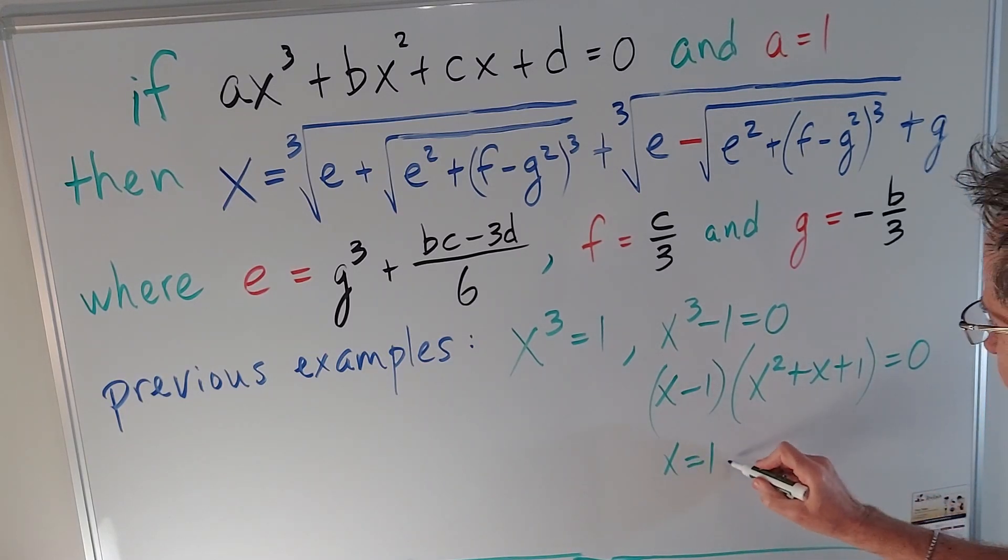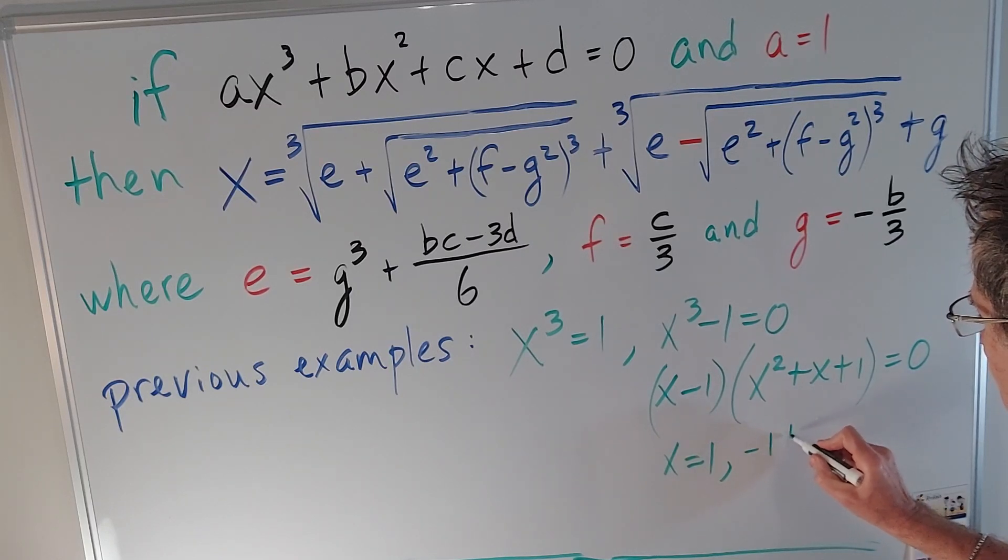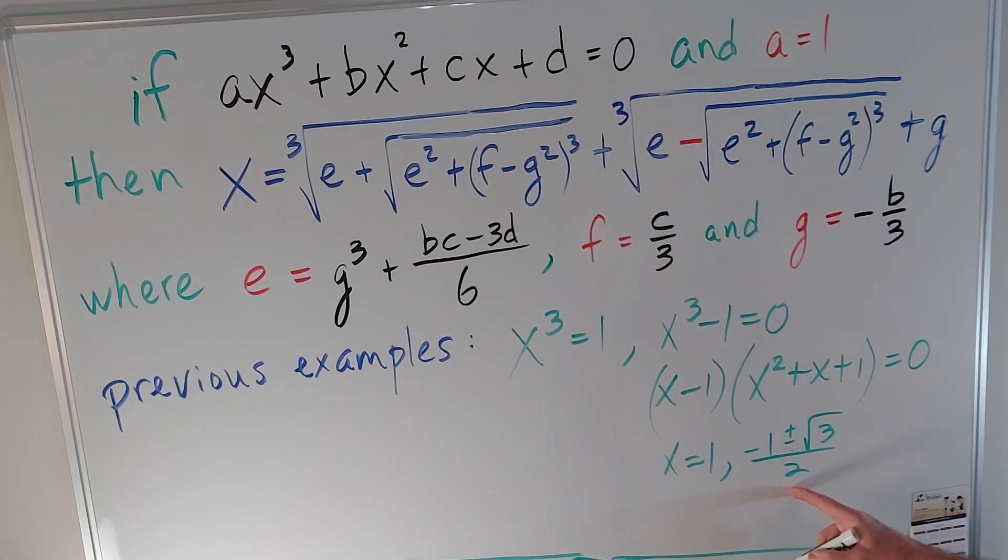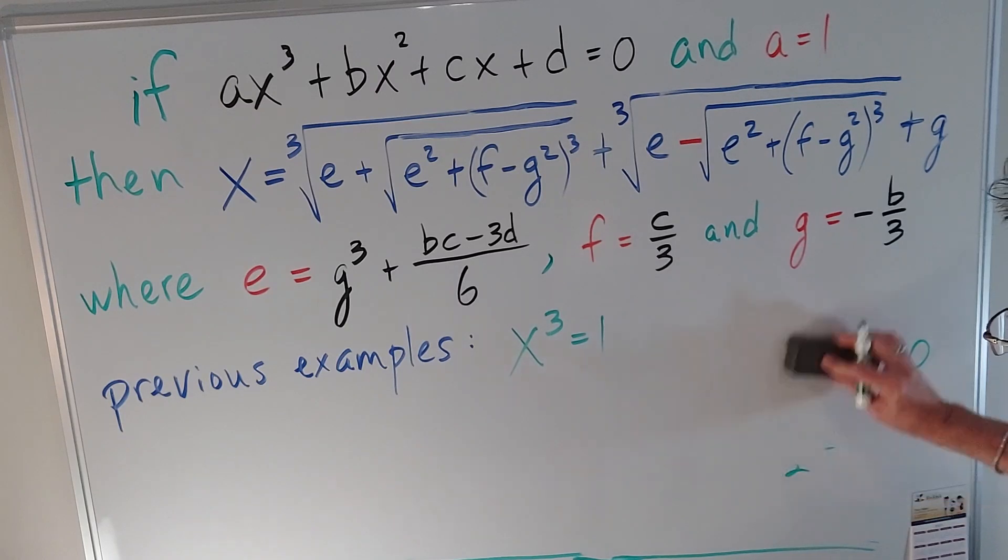But if I use the quadratic formula I'll get -1 ± √3 over 2. In other words -1/2 ± √3/2. I might have put the two in the root sign of the three last time or it might have looked like it. So only the three's under the root sign. But how can we get that by using the formula up here? That's probably what we want to study. So let's go back and do that.